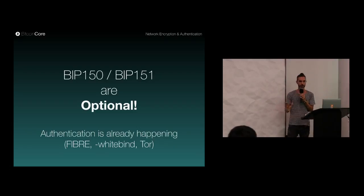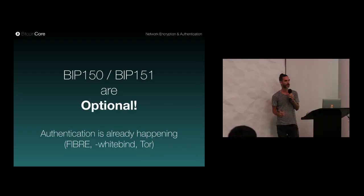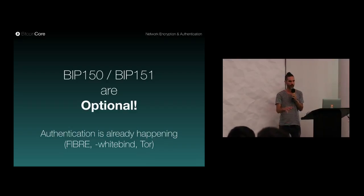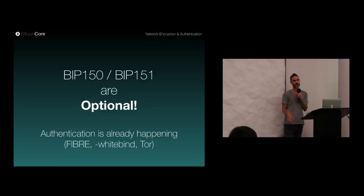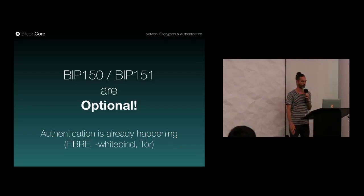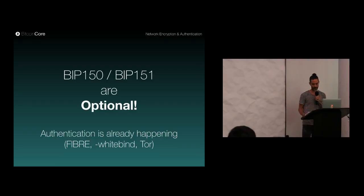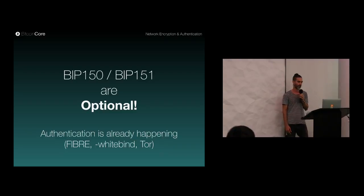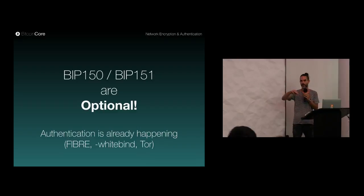These are optional proposals — not something that rolls out as a soft fork. It's not consensus-critical. You don't need to use it, but you can. Authentication is already happening in practice — there are already fixed channels being built over the peer-to-peer network.